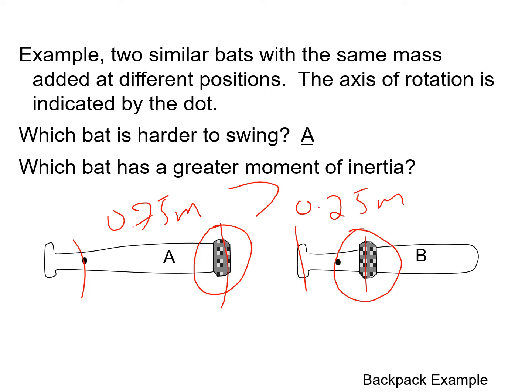We can also look at this with backpacks. When you were in primary school with all your books in your backpack, it would become very heavy. But it's not just that the backpack is heavy — it's also how you wear it. If you wear it with the straps loose so it hangs very low over your butt, that increases that axis of rotation. But if you wear your backpack higher up, it will make it easier to carry.